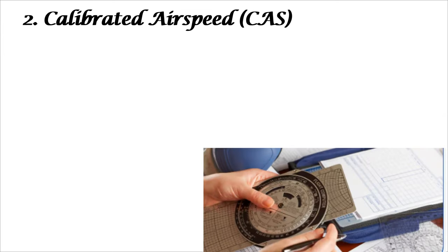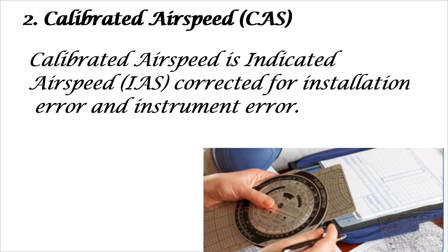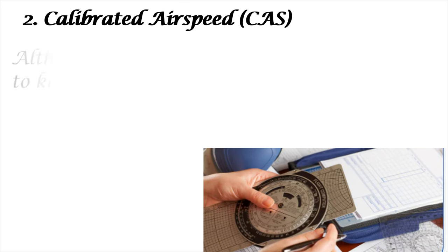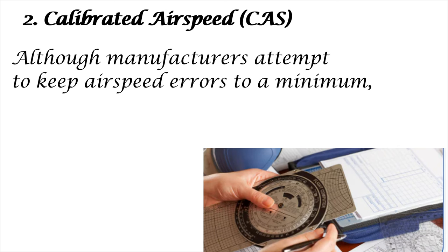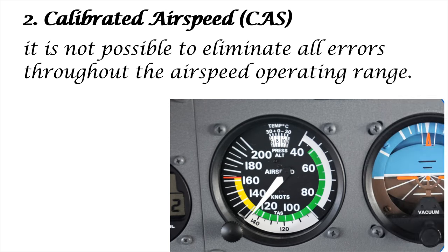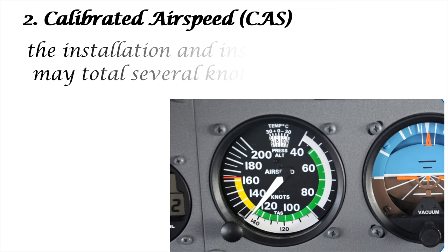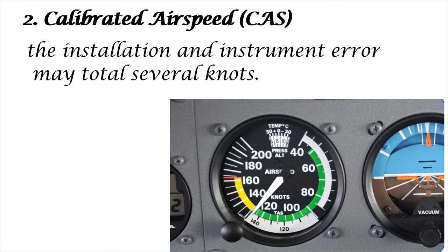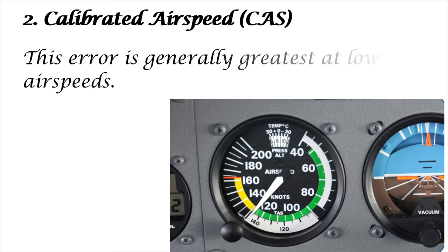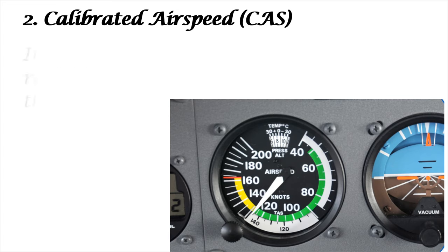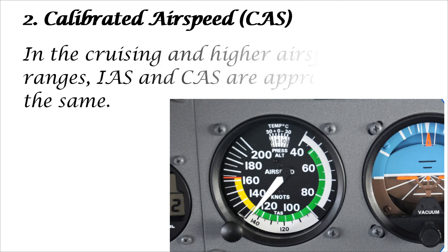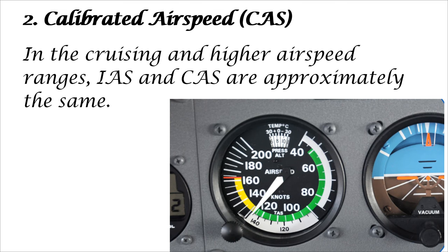Two: Calibrated Air Speed, CAS. Calibrated Air Speed is Indicated Air Speed, IAS, corrected for Installation Error and Instrument Error. Although manufacturers attempt to keep airspeed errors to a minimum, it is not possible to eliminate all errors throughout the airspeed operating range. At certain airspeeds and with certain flap settings, the installation and instrument errors may total several knots. This error is generally greatest at low airspeeds. In the cruising and higher airspeed ranges, IAS and CAS are approximately the same.